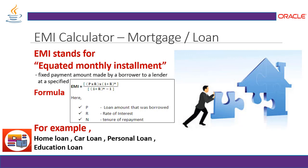The formula for EMI is: P is the loan amount borrowed, R is the rate of interest, multiplied by one plus rate of interest to the power of N, where N is the tenure of repayment, divided by one plus rate to the power of N minus one. This formula gives us the equated monthly installment.